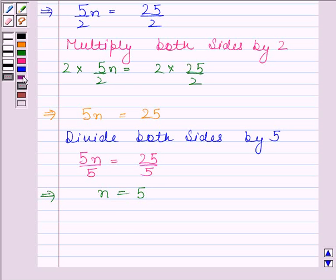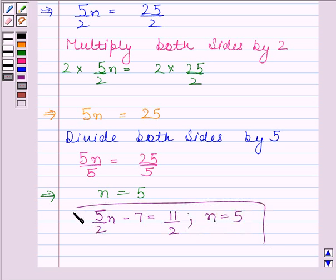So, our required equation is 5 by 2 N minus 7 equals to 11 by 2, and value of N is 5. This is our answer to this part.